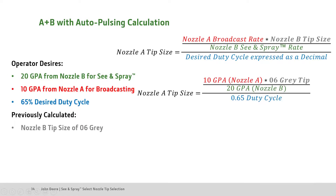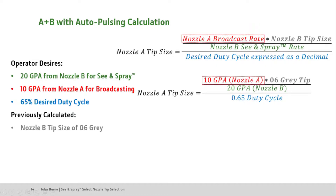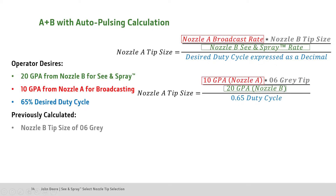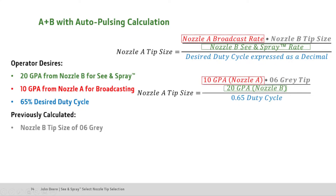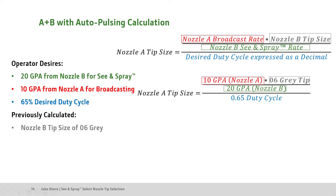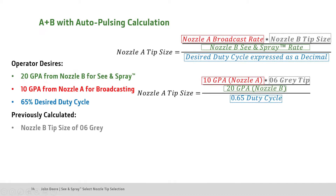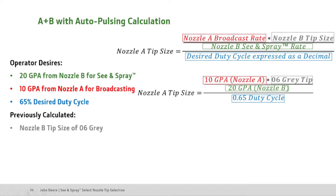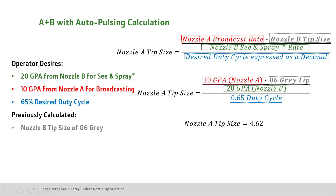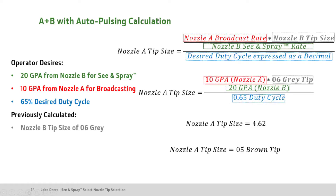To calculate our Nozzle A tip size, take the Nozzle A broadcast rate of 10 gallons per acre and divide that by our Nozzle B See & Spray rate of 20 gallons per acre. Then multiply that by our previously calculated Nozzle B tip size of 06. Next, divide this by our 0.65 desired duty cycle percentage expressed as a decimal. This equates to a Nozzle A tip size of 4.62, which rounding up equals an 05 brown tip for Nozzle A.